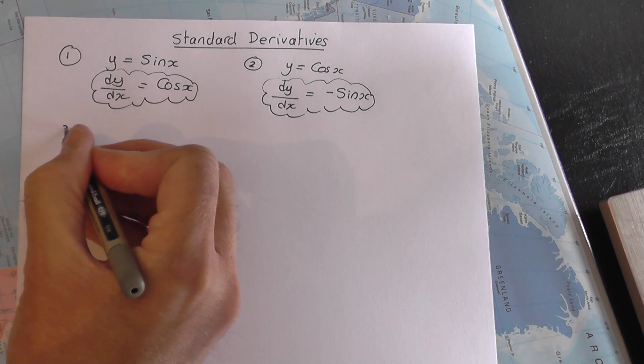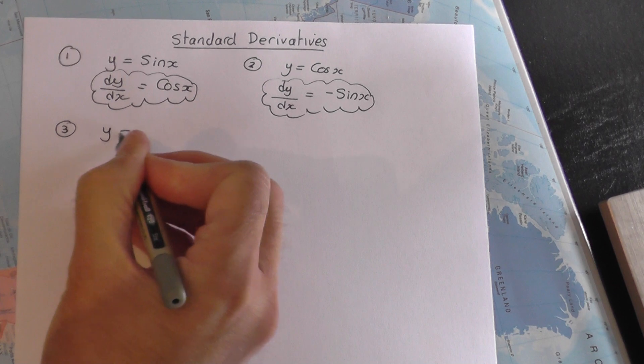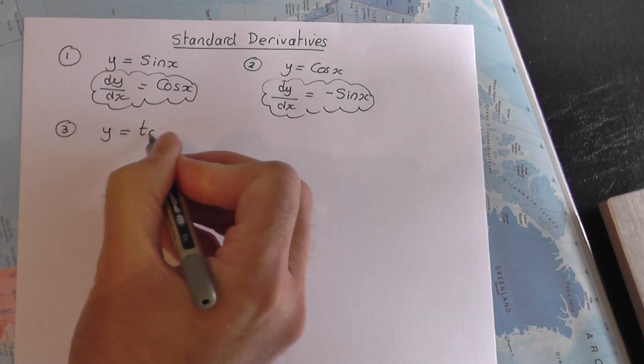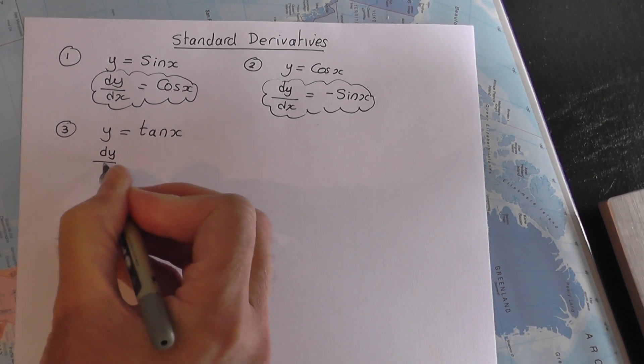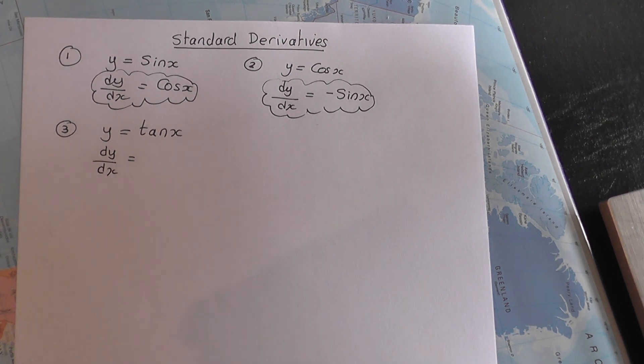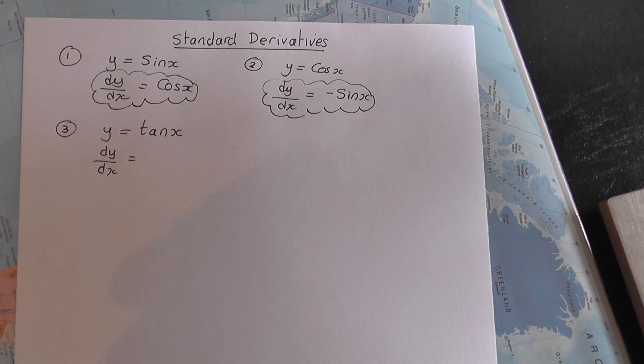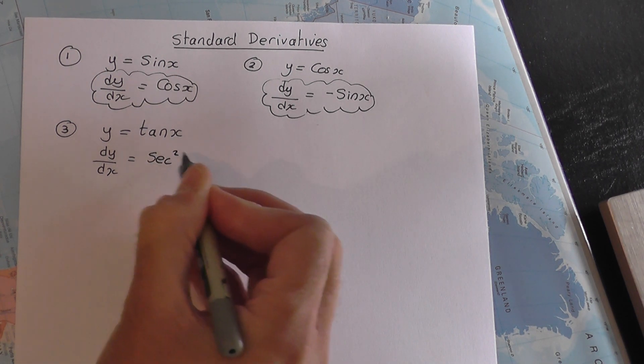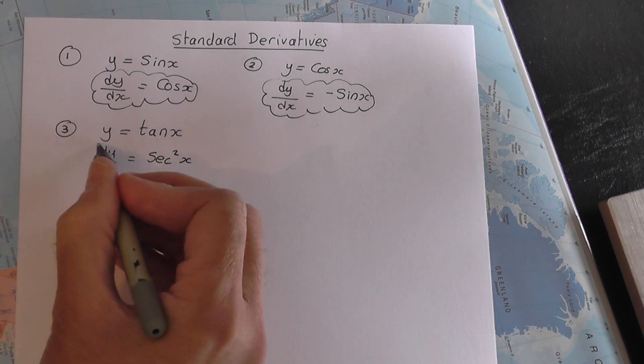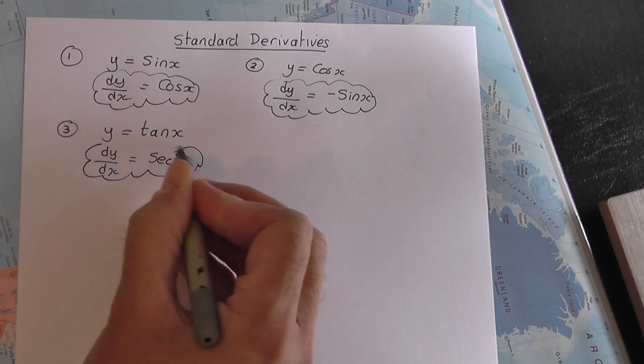Third result. Sin x, cos x, what about y equals tan x? Well, y equals tan x, dy by dx is equal to, now this is a strange result as it stands at the moment because you won't have seen this up to now, it's sec squared x.